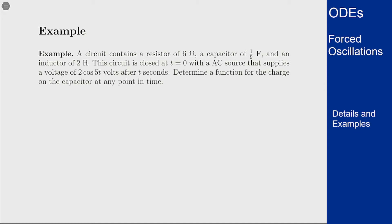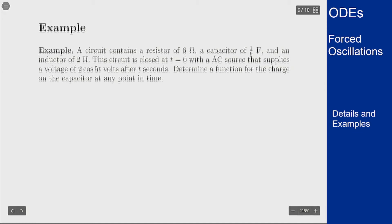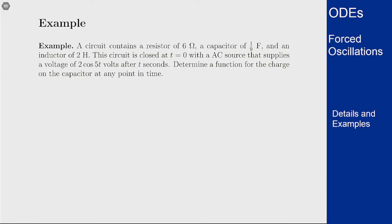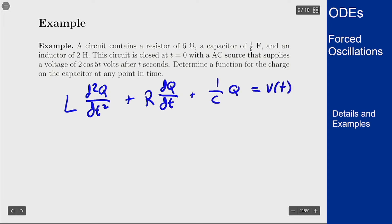We want to use our standard form for an RLC circuit equation. This equation should be the inductance times the second derivative of charge plus the resistance times the first derivative plus 1 over capacitance times the charge equals our applied voltage v(t). In this case, q is the charge on the capacitor, so the function q is the answer we're looking for.